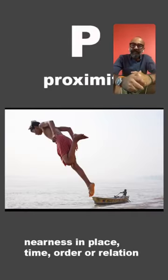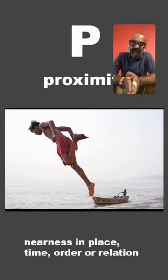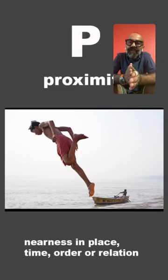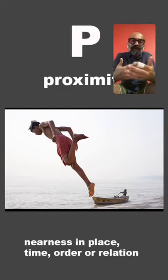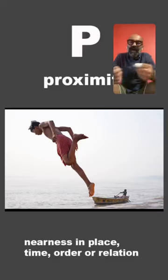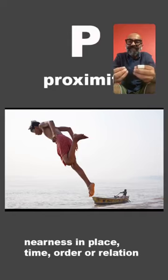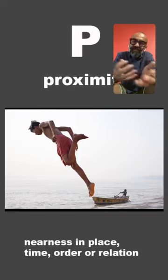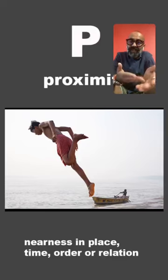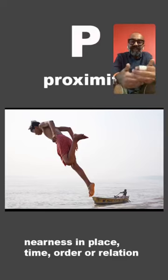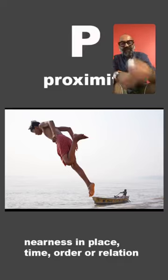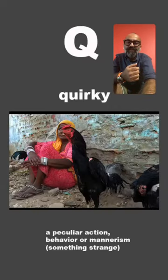P is proximity — nearness in place, time, order, or relation. Look at the distance between the guy jumping and the boat — it could easily be 25 feet. Proximity is where you connect far and near in one shot and make the viewer feel something strange is happening. It looks like somebody is a Superman and the other is a dwarf. Try and create these kinds of pictures. I'm trying my humble best to explain each concept in one image.